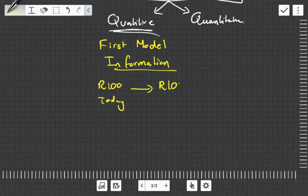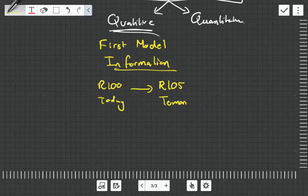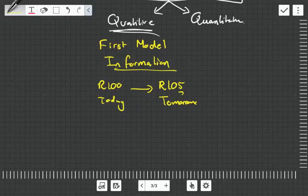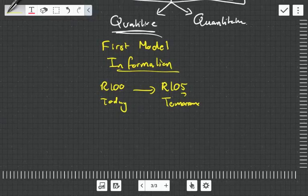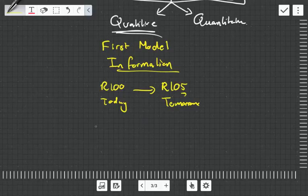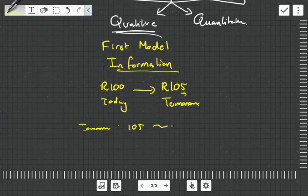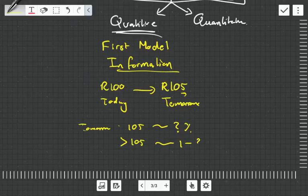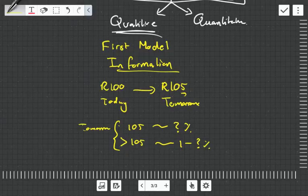Now the reason I'm getting five rand extra is because of the time value of money, the fact that I'm being nice letting you use my money, and to compensate me for the risk that you might not repay me. Which means my payoff tomorrow is either going to be 105 rand with probability we don't know, or it could be anything less than 105 rand with a probability of one minus whatever that is.